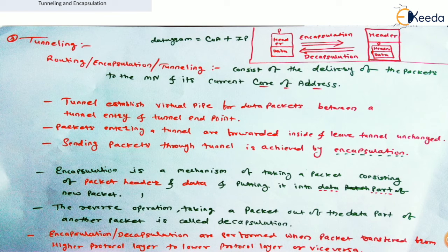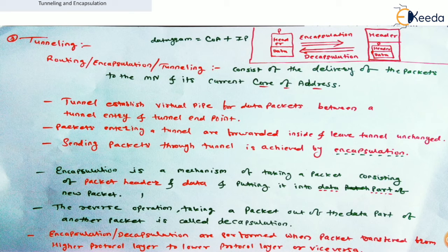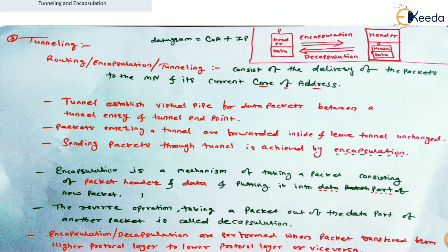Sending packets through a tunnel is achieved by encapsulation. Encapsulation is a mechanism of taking a new packet — which consists of a packet header and data — and putting it into the data part of another packet. Whatever packets are sent using the tunnel, this is done using encapsulation.